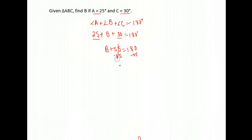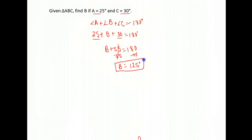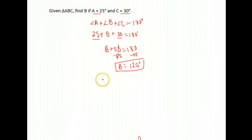Students often come up with shortcuts for the more basic ones, but that would be the more formal way of solving it. Again, the three angles add to be 180, so you set them up that way and solve for your missing angle.